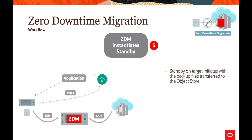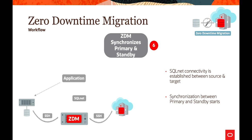Once files have reached the object storage bucket, ZDM will instantiate the standby database on the target platform using all the backup files and database-related files available in the object storage bucket. ZDM then leverages the transport files and the instantiated standby database, built on Oracle Cloud Infrastructure. Once the standby database comes up, ZDM synchronizes the primary and standby using SQL*Net connectivity between source and target, performing synchronization using Data Guard technologies.